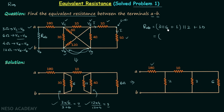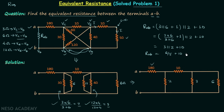Simplifying: 3 parallel with 6 equals 3 × 6 divided by 3 + 6 = 2, then plus 1 gives 3. So we have 3 parallel with 2, which equals 6 over 5, plus 10. The final equivalent resistance R AB equals 11.2 ohms.